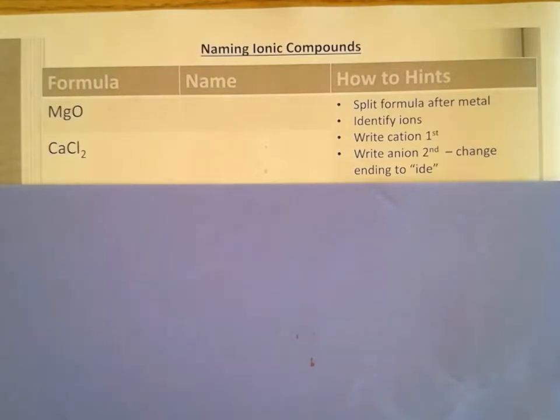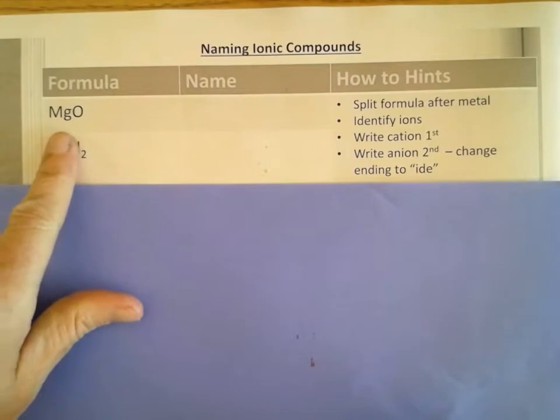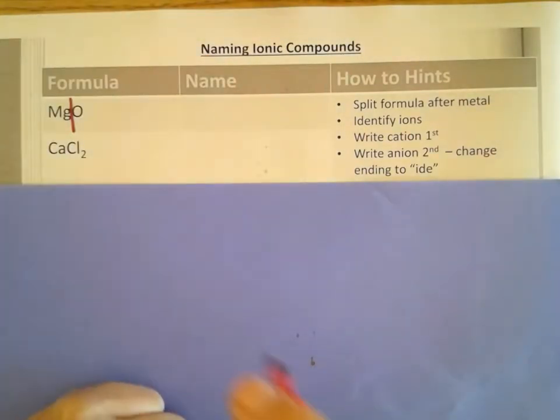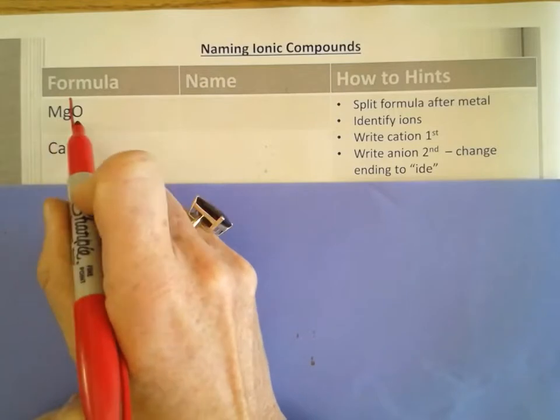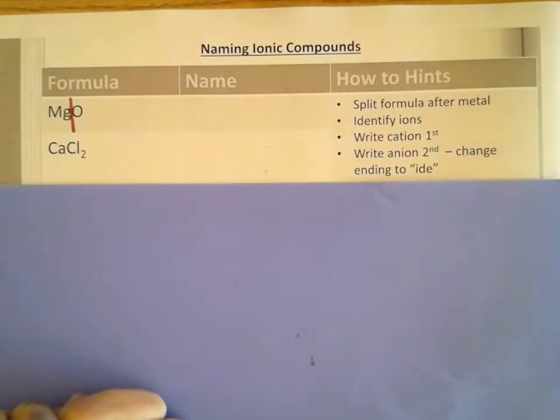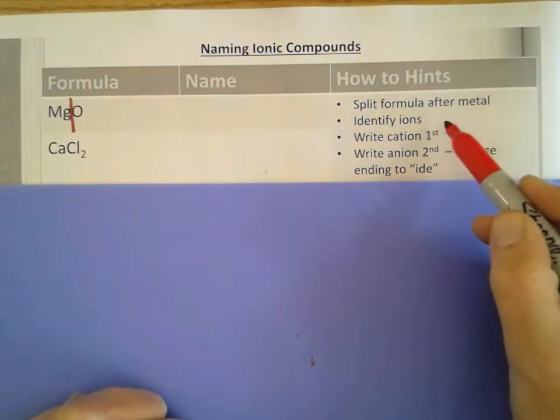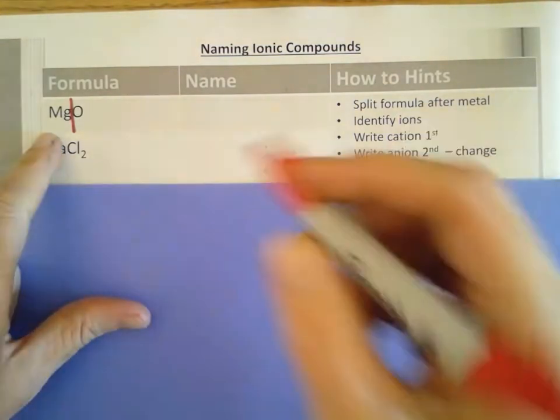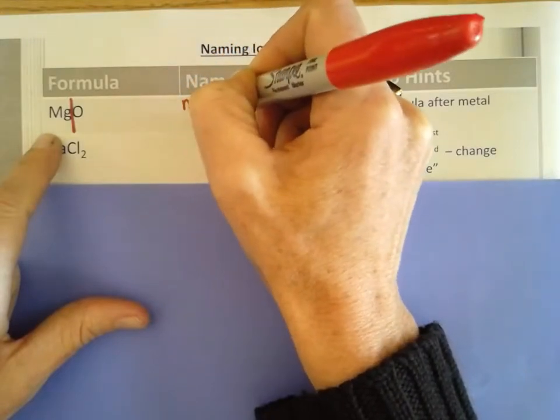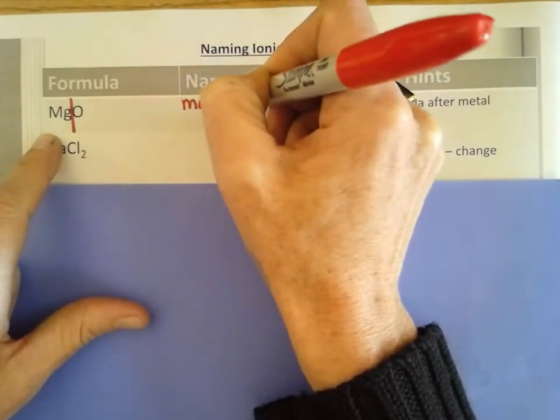So I take a look at the formula. Mg is in group 2, so it's a metal, so I'm going to split it after the metal. Everything on this side is one ion and everything on the other side of the line is the other. So I've done both of these steps. We're going to write the cation. We don't do anything different to it. So whatever the name is, magnesium, that's what we're going to write.